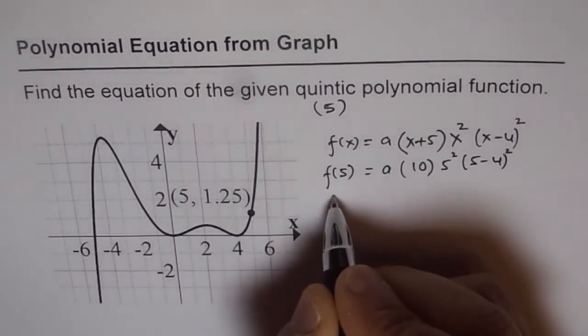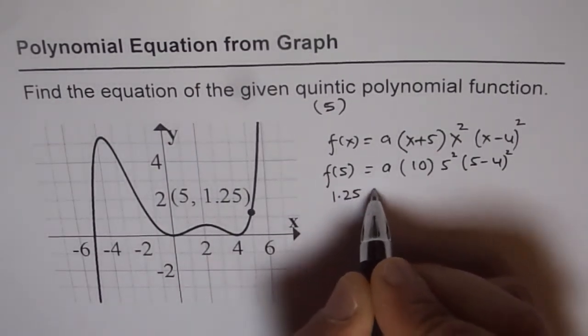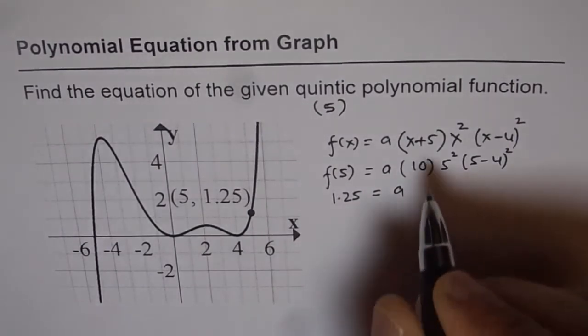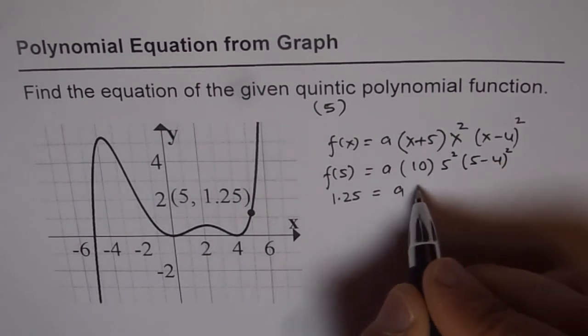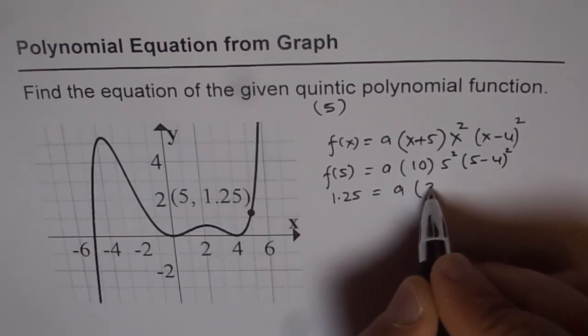f(5) is given to us as 1.25 and we have here a. So a times 10 times 25 times 1. So it is 10 times 25 is 250.